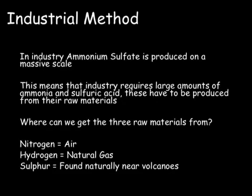In industry this has to be done on a much bigger scale, using much higher concentrations and very high pressure and temperature. This means we need lots of ammonia and sulfuric acid, which need to be obtained from their raw materials. Nitrogen is found in the air, hydrogen usually comes from natural gas sources, and sulfur can be found near volcanoes.